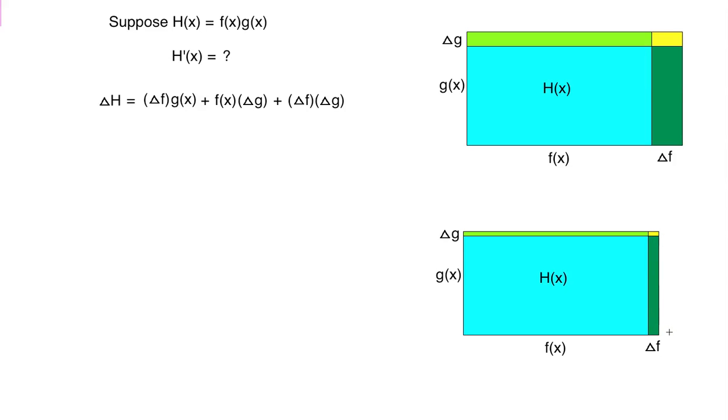These green ones, yeah, they shrink in one dimension each, but they still have one dimension that stays the same. Delta f times full amount of g. Even though delta f gets small, g stays the same. Even though delta g gets small, f stays the same. So really, most of the change in the area, almost the entire change, is taken up by the greenish rectangles. And that's more and more true the smaller delta x is.